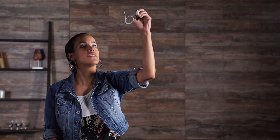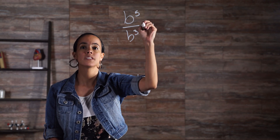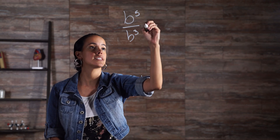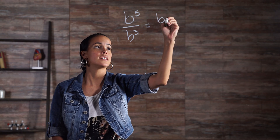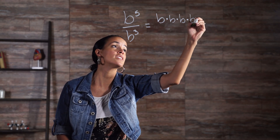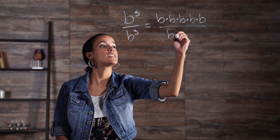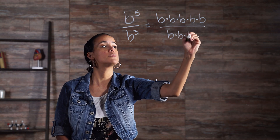The quotient of powers property also applies to powers with the same base. However, the rule requires the subtraction of exponents. Let's look at an example: b to the fifth over b cubed in expanded form would look like this — b times b times b times b times b, all over b times b times b.